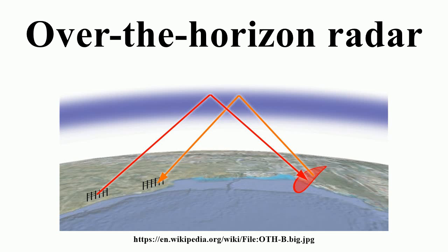Given the losses at each reflection, this back-scatter signal is extremely small, which is one reason why OTH radars were not practical until the 1960s, when extremely low-noise amplifiers were first being designed. Since the signal reflected from the ground will be very large compared to the signal reflected from a target, some system needs to be used to distinguish the targets from the background noise. The easiest way to do this is to use the Doppler effect, which uses frequency shift created by moving objects to measure their velocity. By filtering out all the back-scatter signal close to the original transmitted frequency, moving targets become visible — even speeds as low as 1.5 knots.